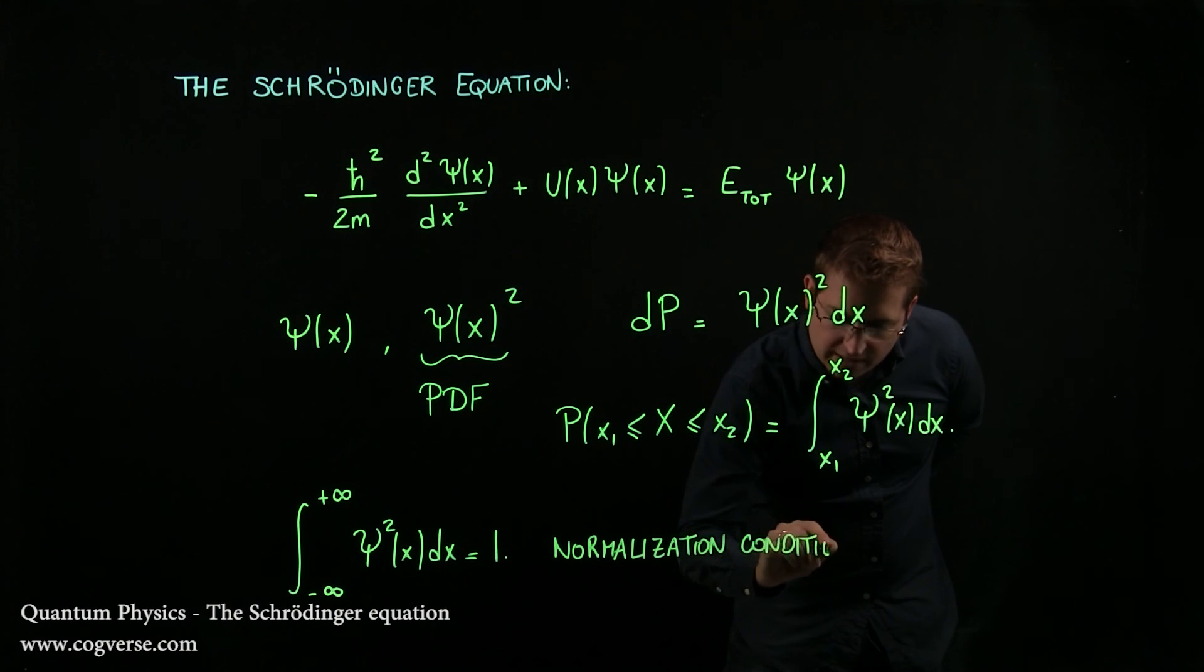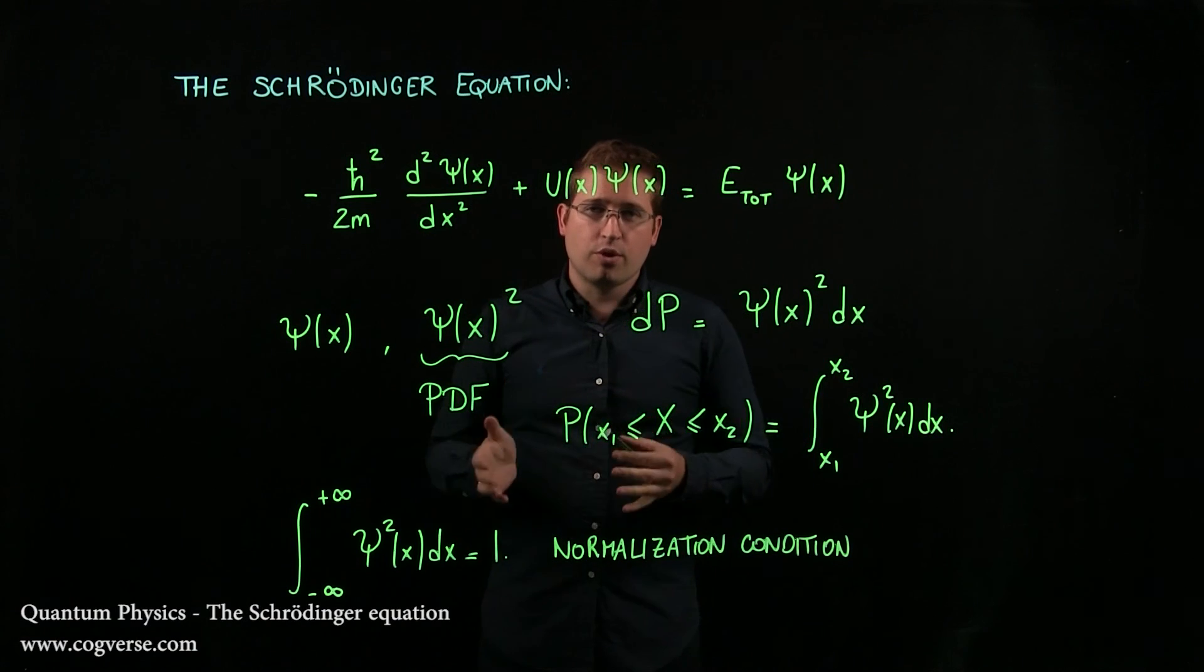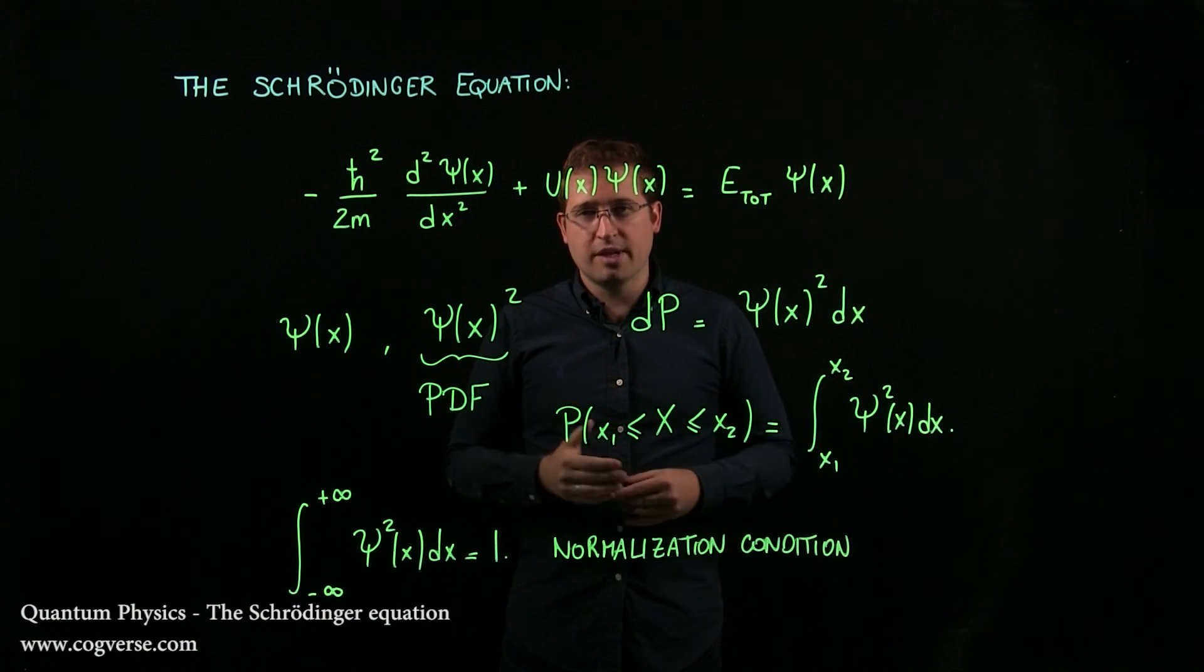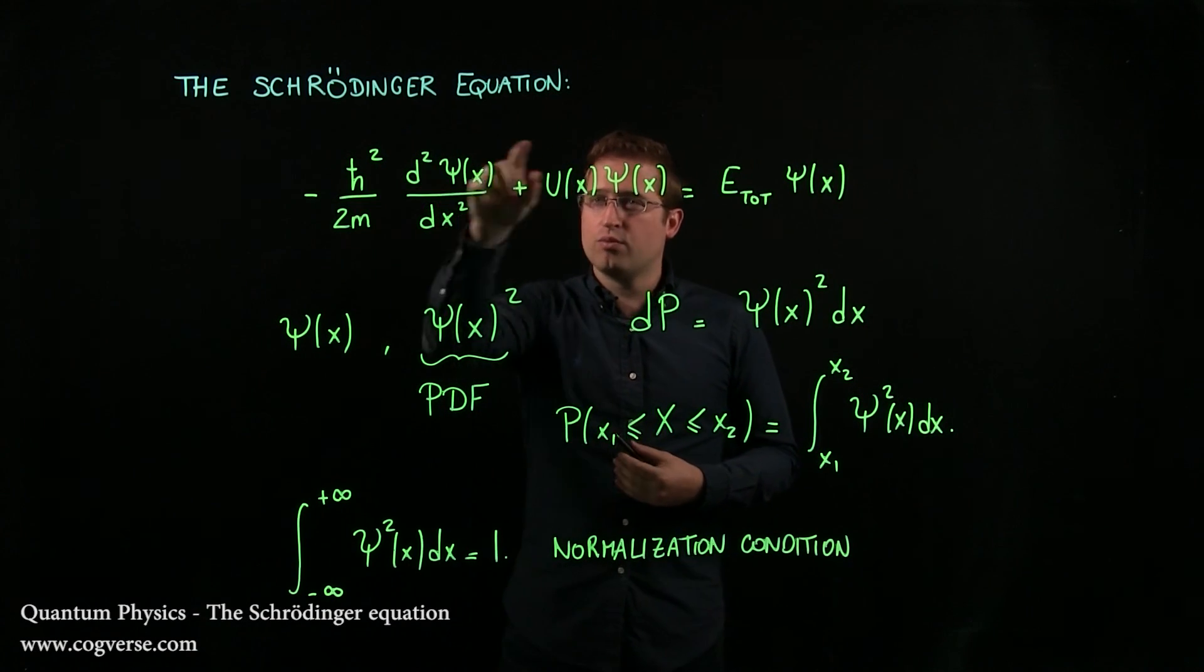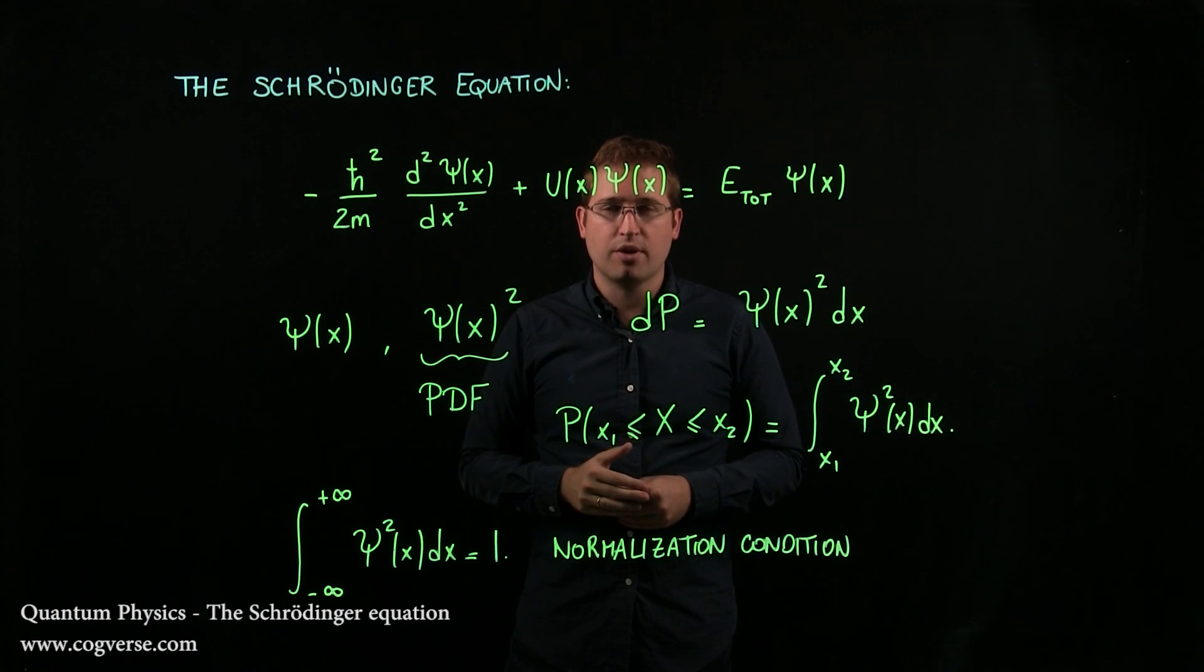So this is a very brief and simple introduction to the Schrödinger equation. But we're going to do a very classic problem next, so that you see how we can use this equation and how we can use wave functions to describe the state of a particle.